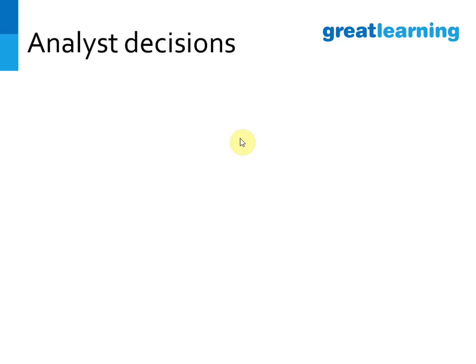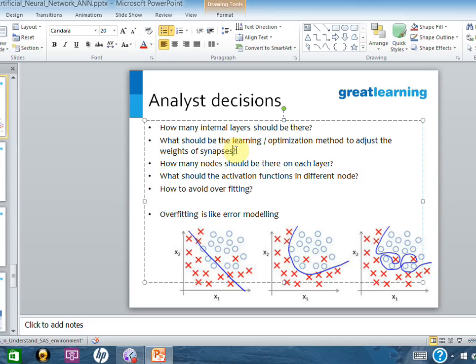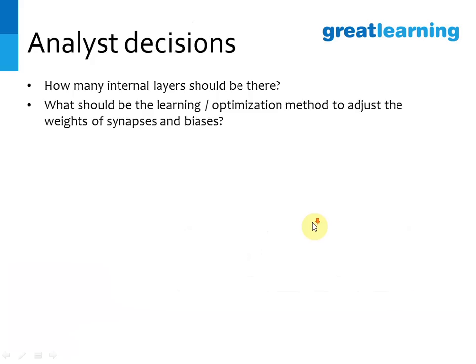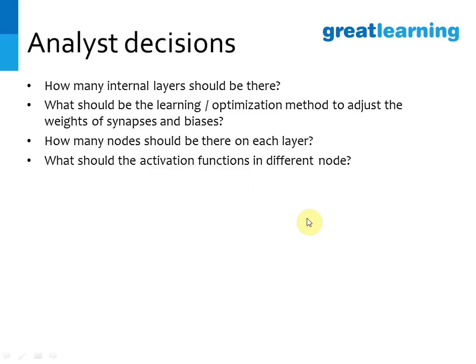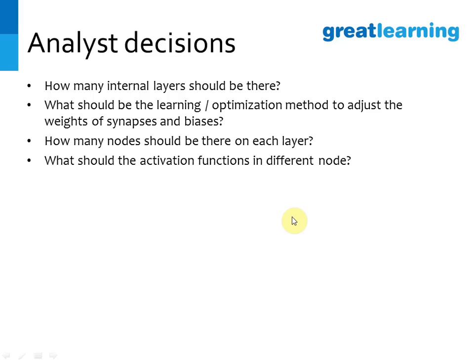There are several decisions an analyst can make that impact the neural network's operation. How many internal (hidden) layers should there be? What should be the learning or optimization rate to adjust the weights of synapses and biases? How many nodes should be in each layer? What should be the activation function? Most commonly, people set input nodes equal to the number of independent variables, use just one hidden layer, and use the sigmoid activation function: 1 / (1 + exp(-x)). However, analysts are free to use other activation functions as well.